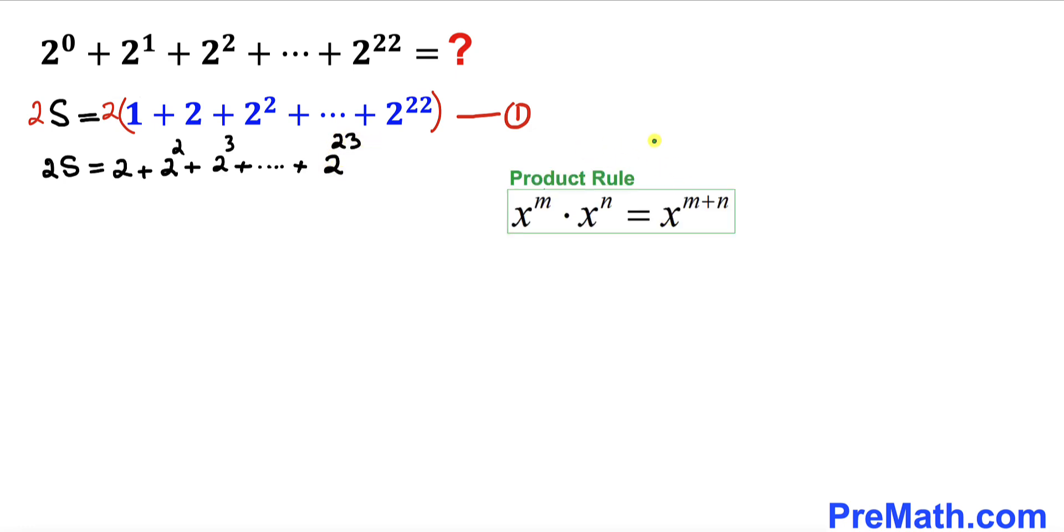And here we use this product rule of exponents. When we multiply them we add their exponents. Let me call this our equation number 2.